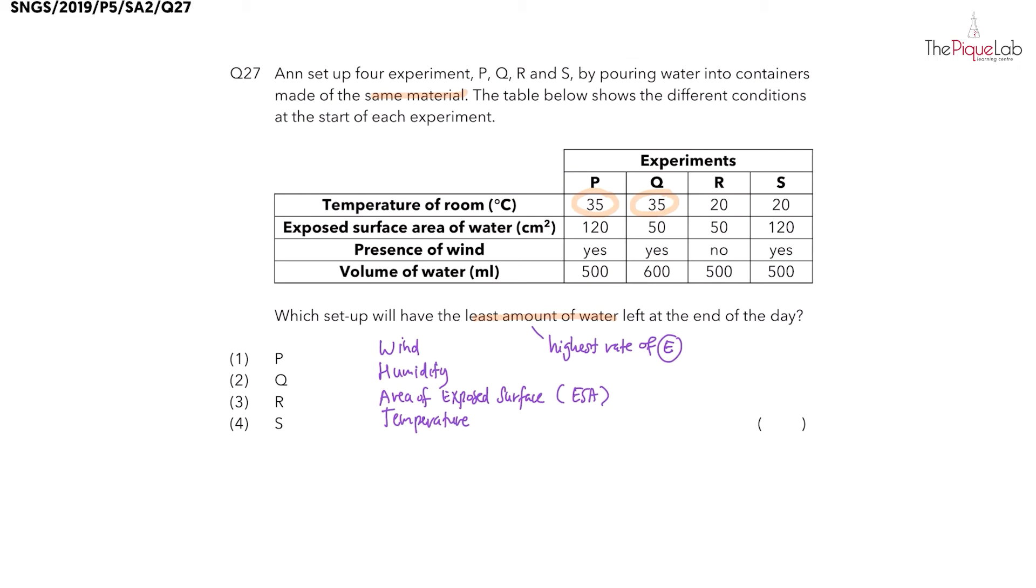Now what about exposed surface area? The greater the exposed surface area, the faster the liquid gains heat from the warmer surrounding air. Will evaporation be faster or slower? Yes, evaporation will be faster when the exposed surface area is greater. We have setup P and setup S with the larger exposed surface area.